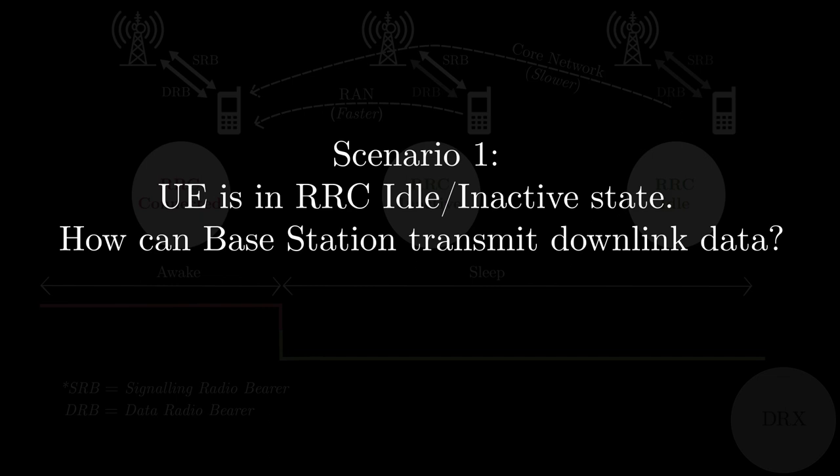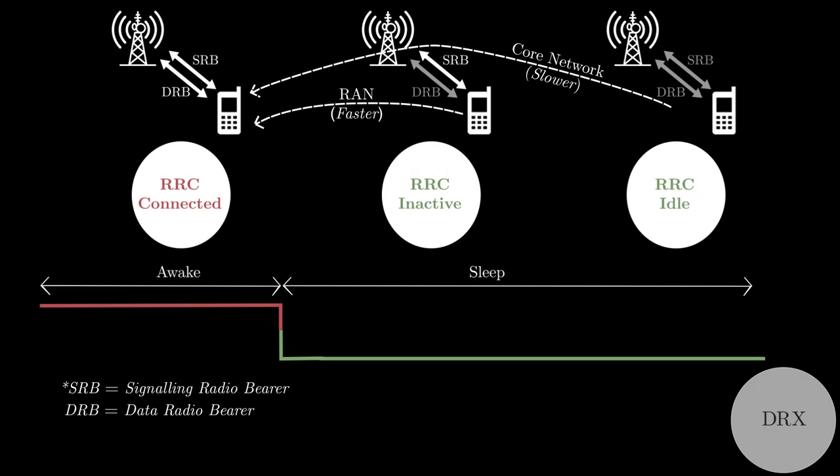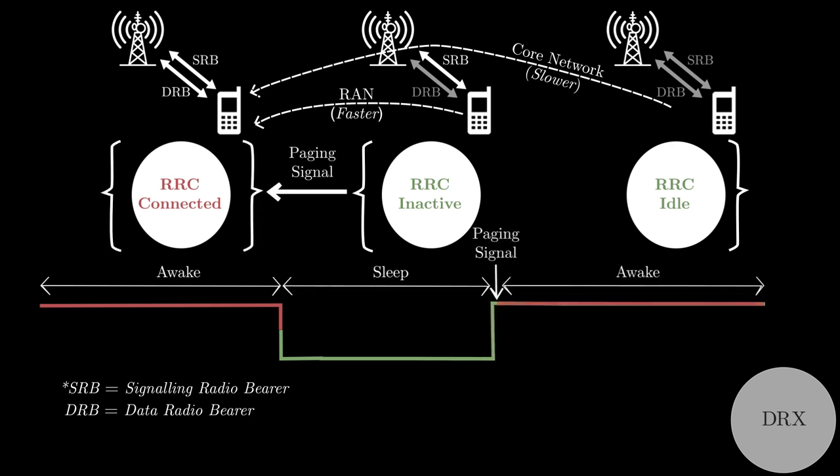Assume a scenario where UE is in RRC idle or RRC inactive state, and the base station wants to transmit downlink data. Before transmitting downlink data, base station has to change UE's state to RRC connected state by sending a special signal called paging signal. But UE isn't reachable during sleep time, so UE cannot listen to paging signal.